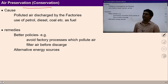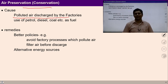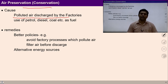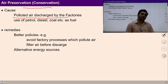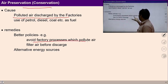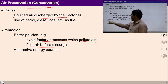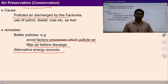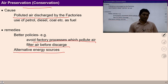For air preservation, we can see that polluted air discharged by factories, use of petrol, diesel, and other fuels are all causing problems in the air. Possible remedies include avoiding factory processes which pollute air, filtering air before discharge, and using alternative energy sources. You can think of more remedies — make a list as an exercise at home. See the problems of natural resources around you and try to write down possible remedies.